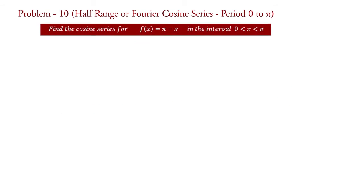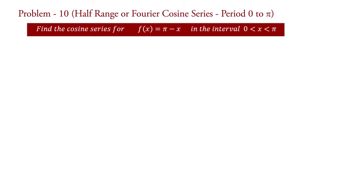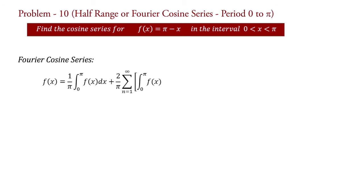The problem is: find the cosine series for f(x) equal to pi minus x in interval 0 less than x less than pi. The Fourier cosine series is f(x) equal to 1 upon pi integral 0 to pi f(x) dx plus 2 upon pi summation n equal to 1 to infinity, integral 0 to pi f(x) cos(nx) dx, into cos(nx).